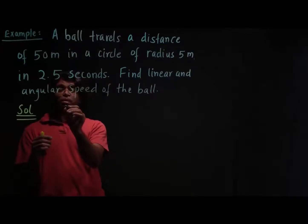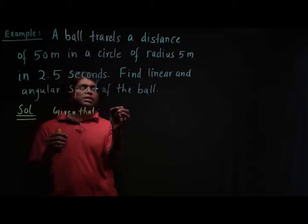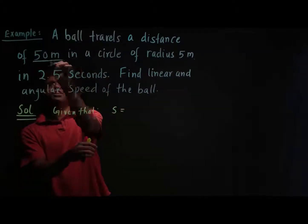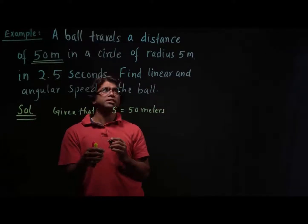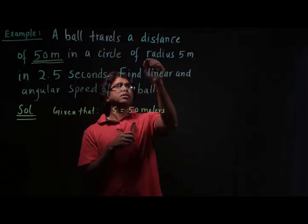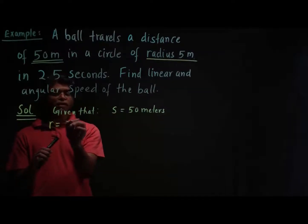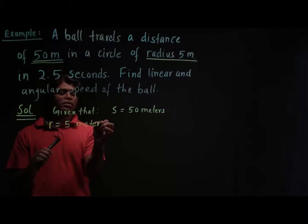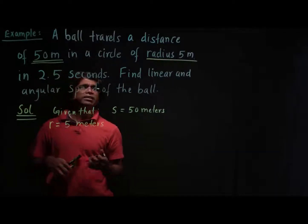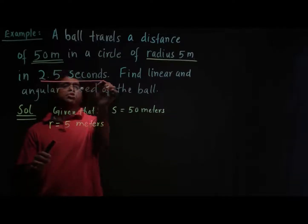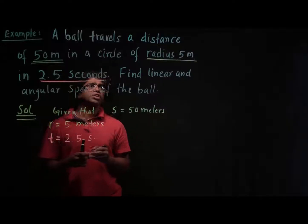It is given that the distance s is 50 meters. The radius of the circular path r is given as 5 meters. And the time t is given as 2.5 seconds.